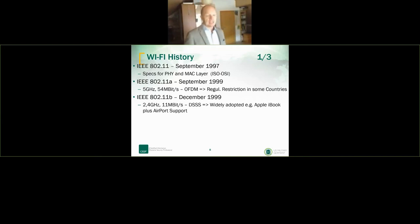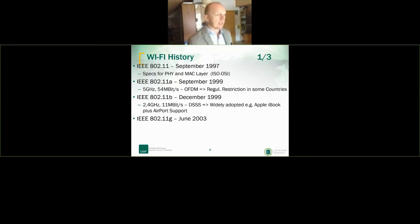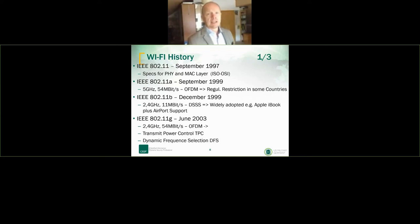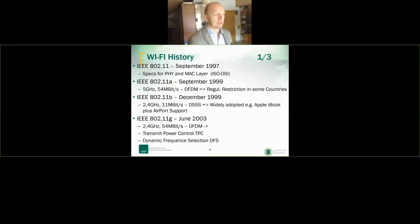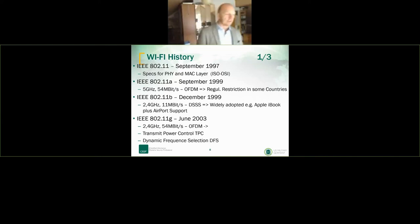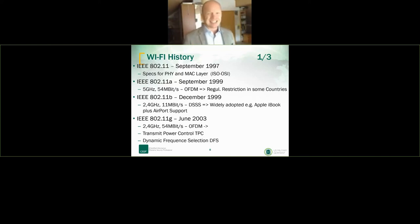802.11g came in June 2003, again on the 2.4 GHz band, with higher throughput of 54 Mbps maximum using OFDM. It introduced two important features: Transmit Power Control (TPC) and Dynamic Frequency Selection (DFS). In your driver, when you look at your Windows network configuration, you can actually turn these on and off in some drivers.